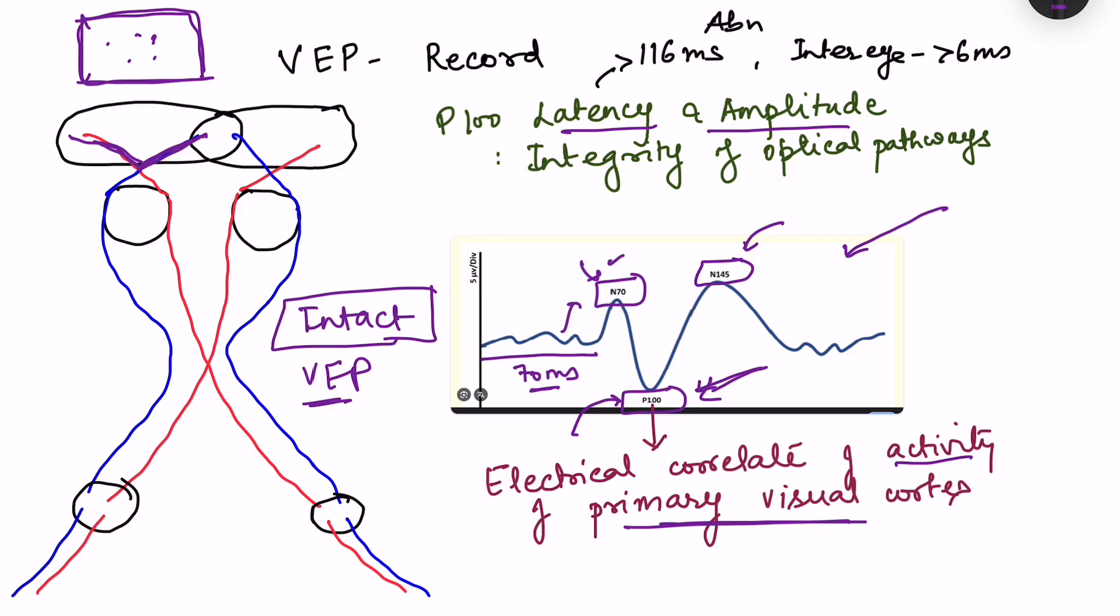We have to mainly note the latency and amplitude of this P100. Any latency which is more than 116 milliseconds is considered abnormal. And when we stimulate different eyes, we record from the right eye, we record from the left eye. If there is a difference in the P100 from both the eyes, that is inter-eye difference, if that difference is more than 6 milliseconds, then also it is considered as abnormal.